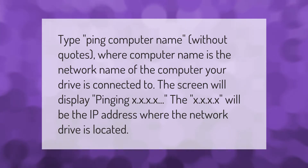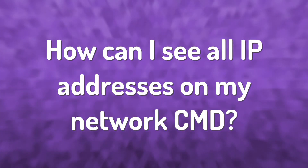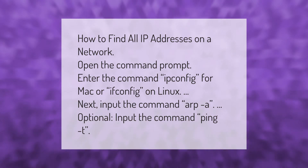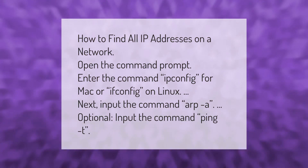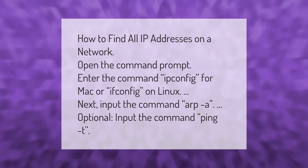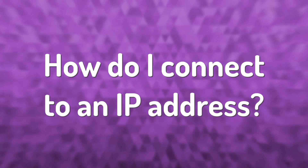How to find all IP addresses on a network: open the command prompt and enter the command ipconfig for Mac or ifconfig on Linux. Next, input the command arp -a. Optionally, input the command ping -t.